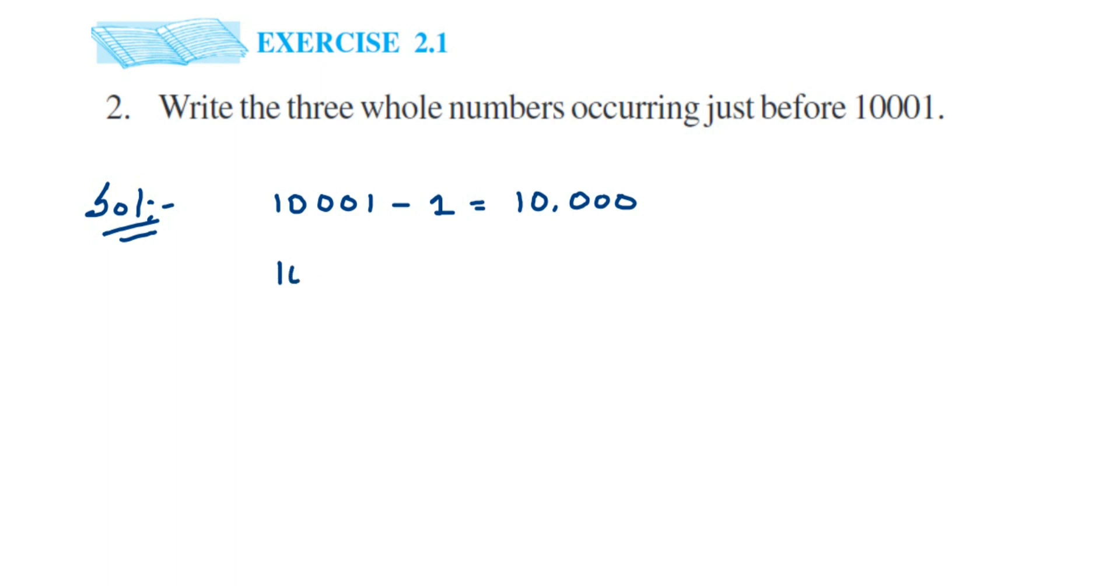To this 10000, again I have to subtract one to get the previous number, which will be equal to 9999. You can subtract the numbers if you want; I hope you all know how to subtract. I'm directly writing the answer here. Now we want three numbers, right?